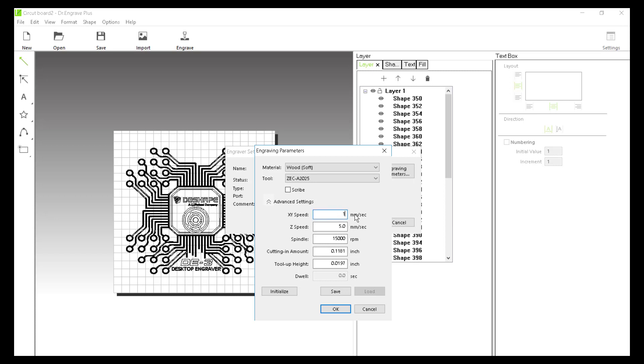Under advanced settings, we can set up the X and Y speed, and Z speed, the spindle speed, cutting in amount, and then tool up height.